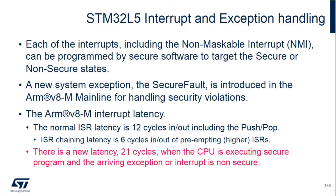The normal latency for an interrupt in the L5 is just like other Cortex-M, which is 12 cycles in and out, including the pushes and pops, so all the context is saved for you. Chaining — preempting a lower for a higher — is six cycles in and out. When there's a return from the secure side to service an ISR on the non-secure side, that takes 21 cycles rather than 12 cycles. Whenever you have to service a non-secure interrupt from the secure side, the context security has to be protected, which takes an extra nine cycles.